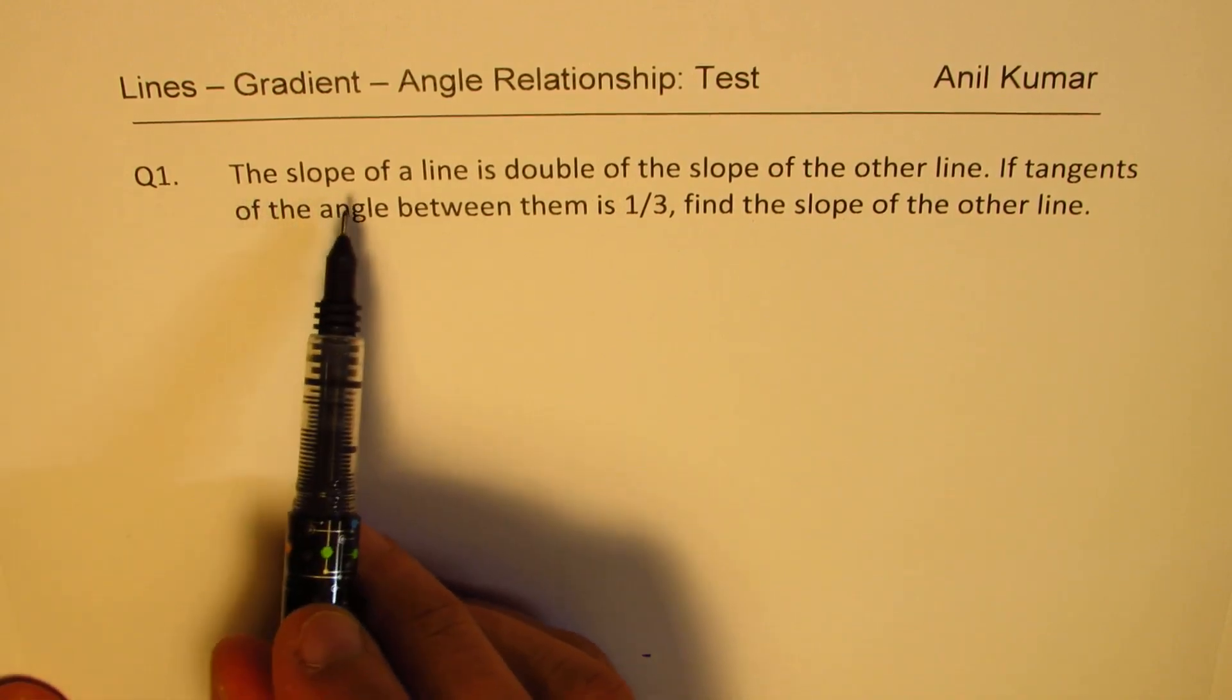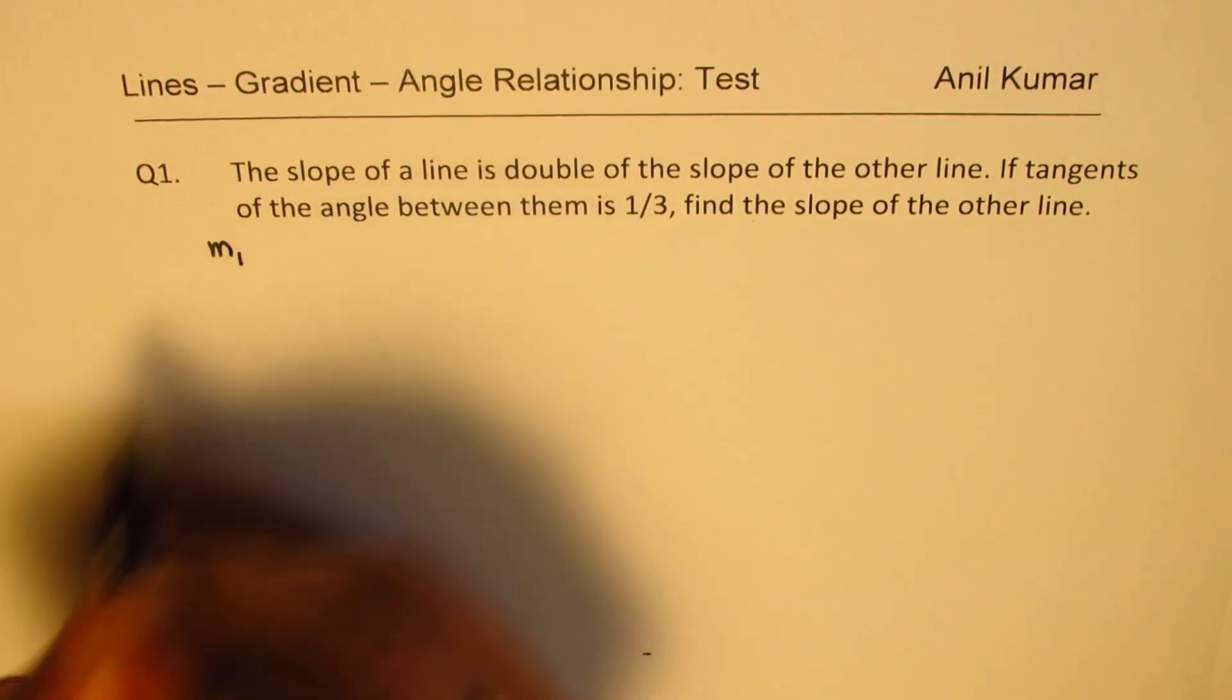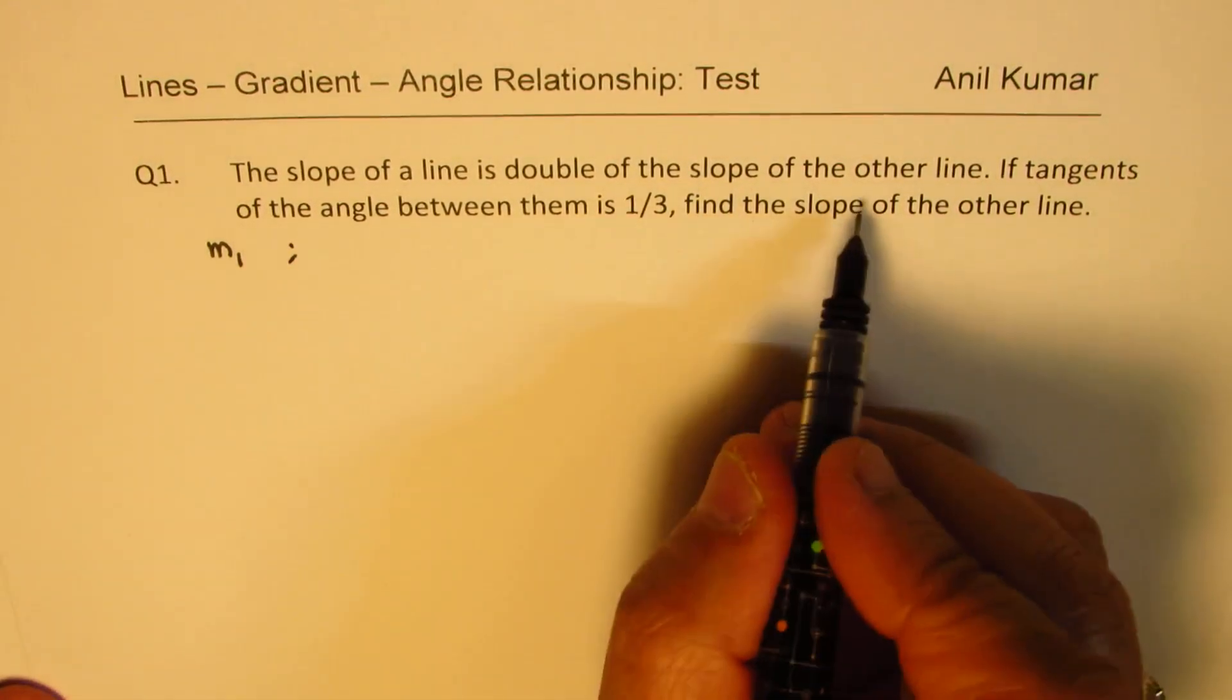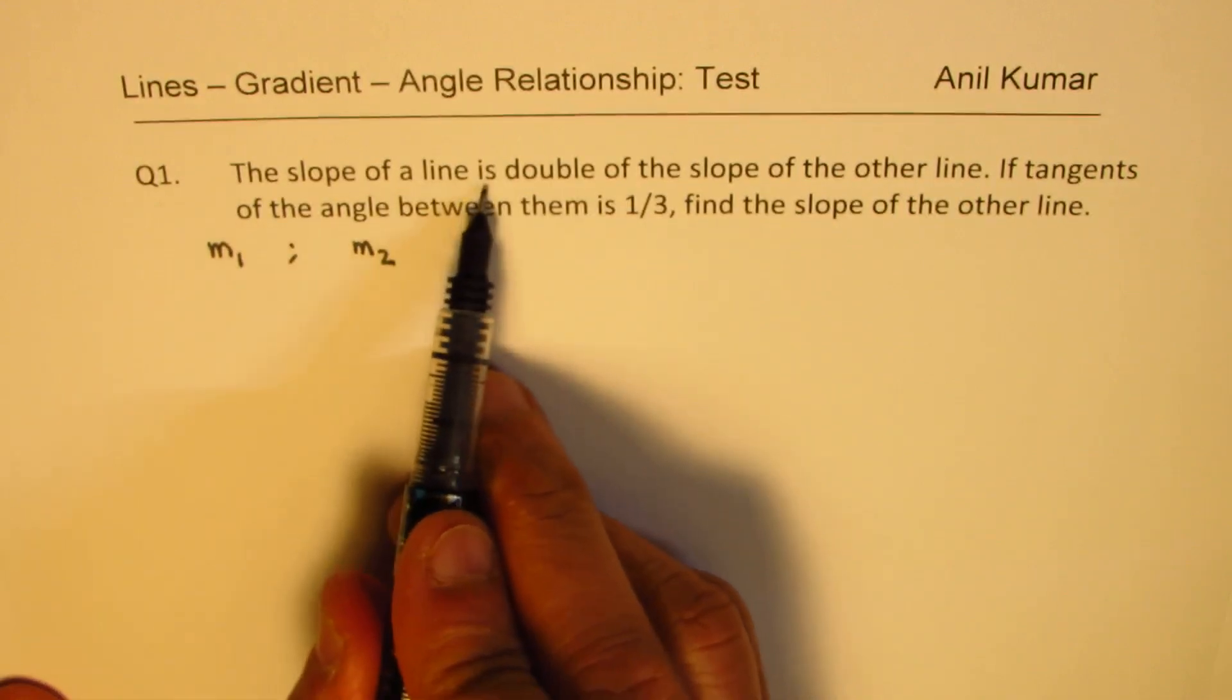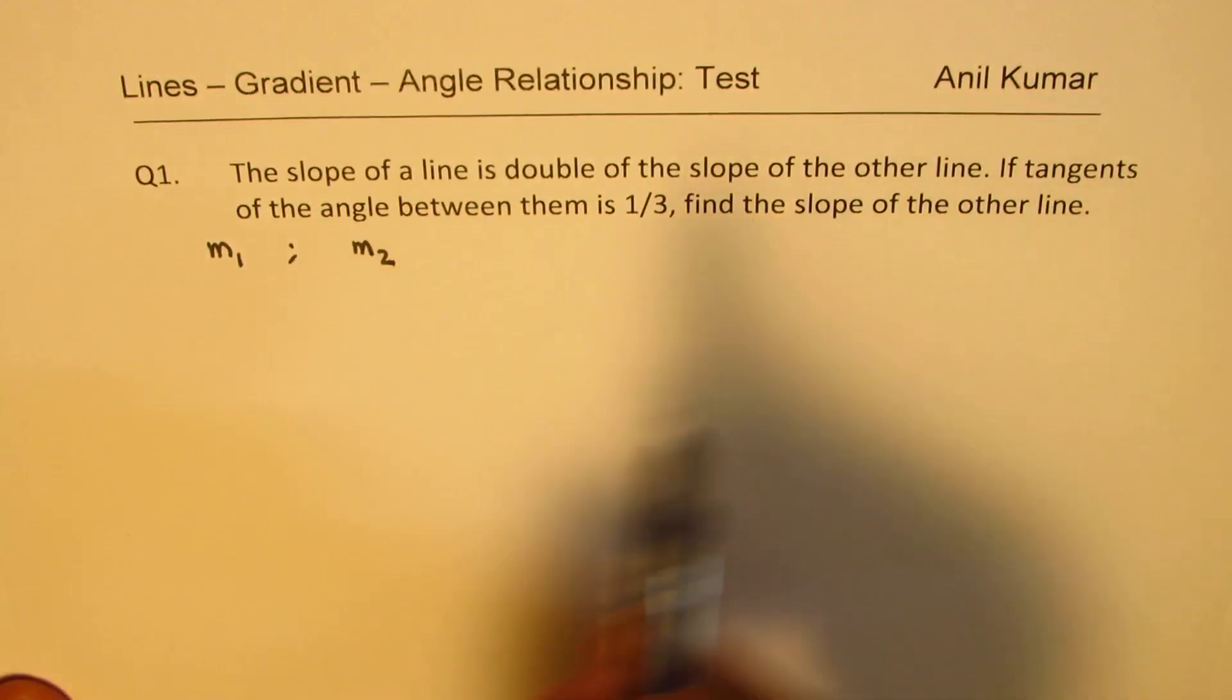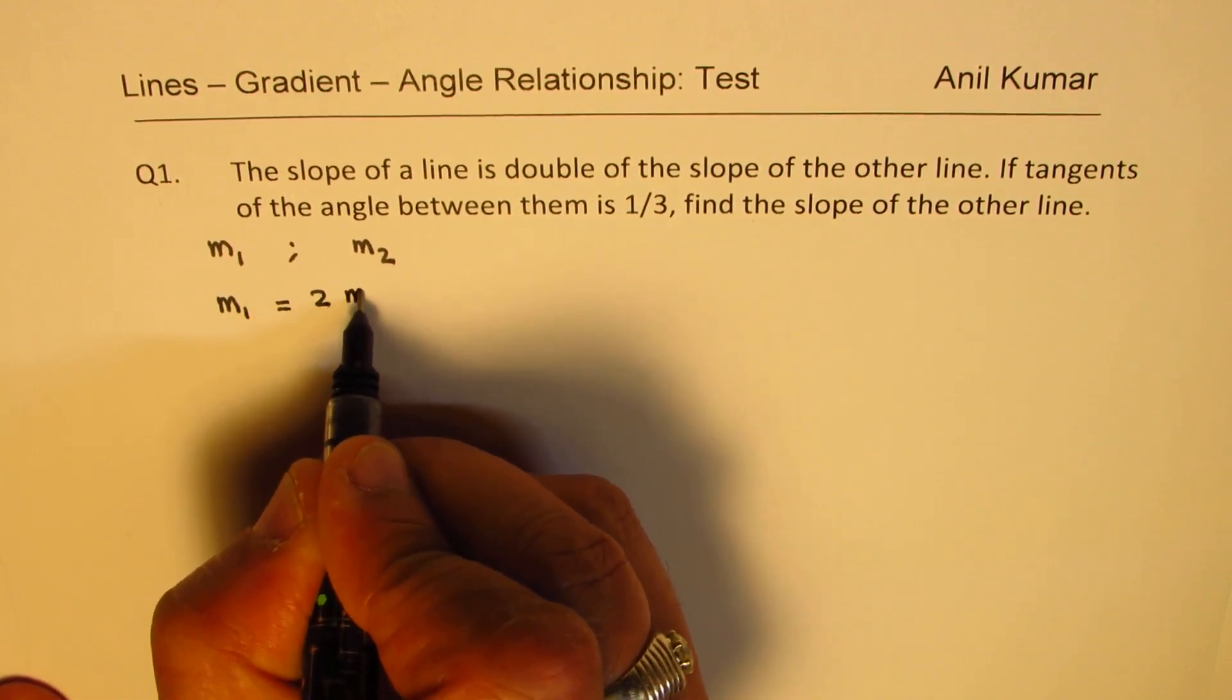So, we are given slope of a line, let us say line 1 slope is m1, slope of the other line, let it be m2. We are given slope of a line is double of the slope of the other line. So, that means m1 is 2 times m2.